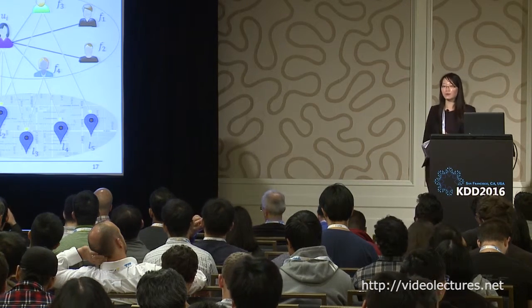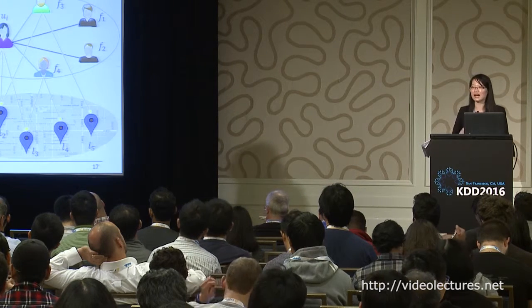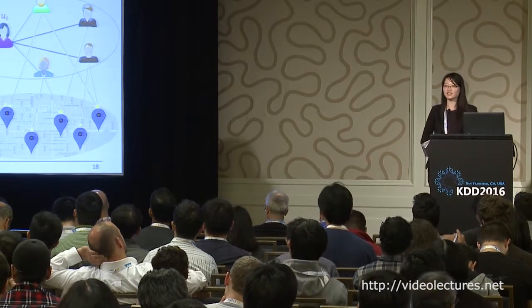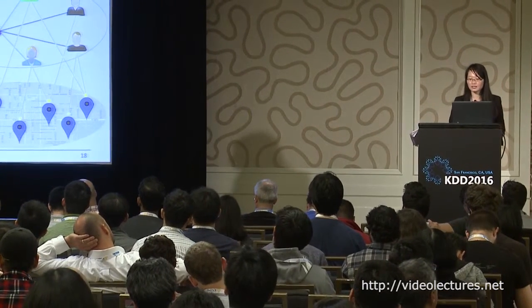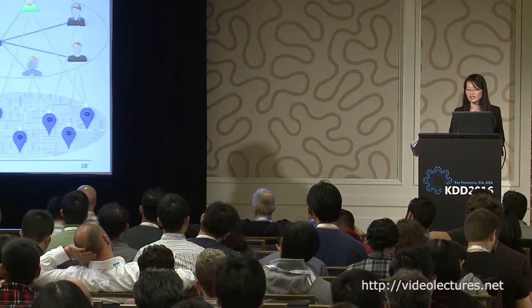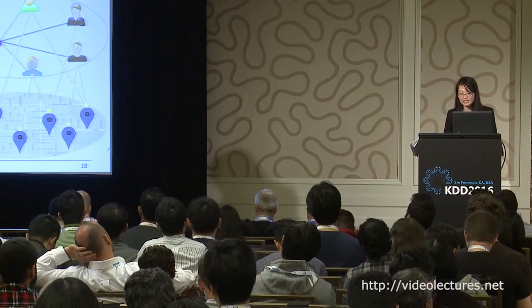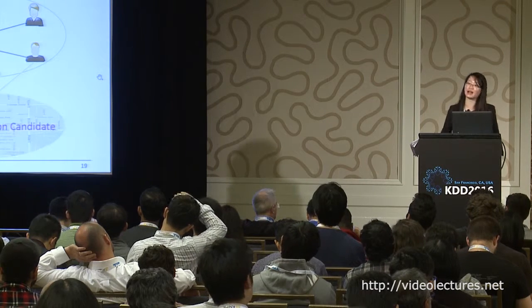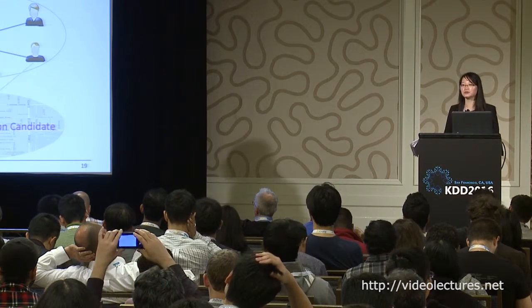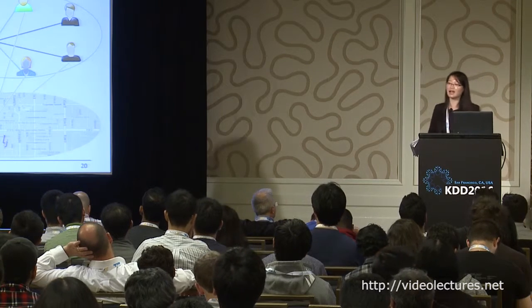From the real-world data, we find users would like to share similar interests with these three types of friends. This motivates us to learn a set of potential check-ins from friends. Formally, the problem definition in the first step can be formulated like this: suppose this is the target user, she has these friends, and these friends have checked in these locations. The task is to find a set of top locations that she might be interested in. We want to estimate the probability that the target user prefers each location candidate. To this end, we propose two methods: linear aggregation and random walk.